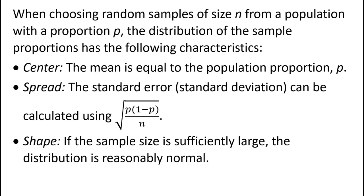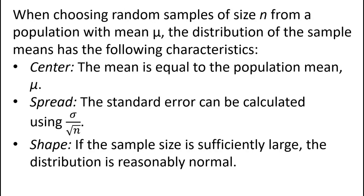Next we'll look at the central limit theorem for a single mean. When choosing random samples of size n from a population with mean mu, the distribution of the sample means has the following characteristics. Center: the mean is equal to the population mean mu. Spread: the standard error is calculated using sigma divided by the square root of n. Shape: if the sample size is sufficiently large, the distribution is reasonably normal. A normal distribution is a good approximation as long as n is greater than or equal to 30. If the population data is normally distributed, the sampling distribution will be normal for smaller sample sizes.